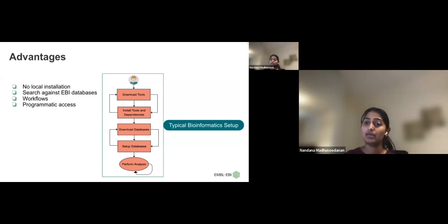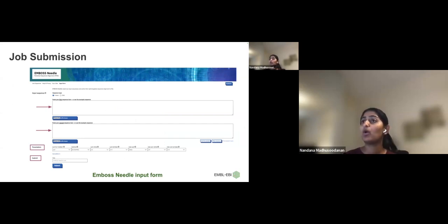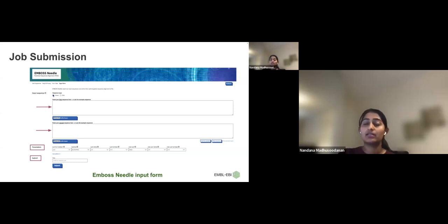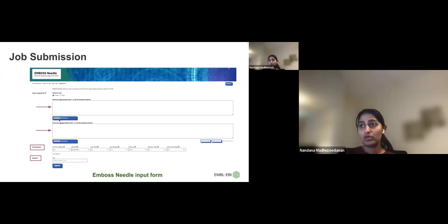We also provide programmatic access in addition to the web interface — I'll talk about that shortly. This is a typical Job Dispatcher tool homepage. This is the input form for EMBOSS Needle. Most tool templates look the same: there's a description about the tool, you can select sequence type (protein or DNA) and the parameters change accordingly. Since it's a pairwise alignment, it expects two sequences. You can also use the file upload option, and example inputs are available linking to our documentation page.